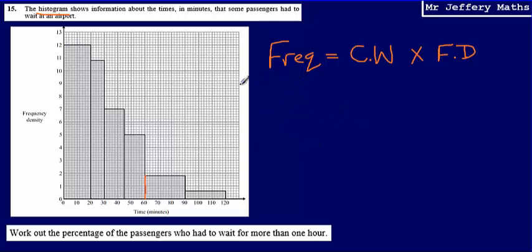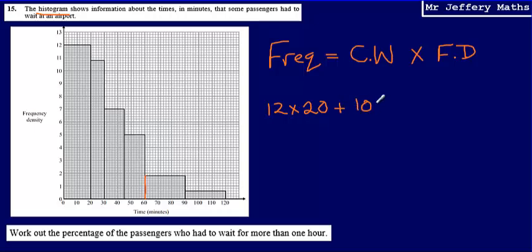So this first bar is 12 multiplied by 20 — class width of 20, frequency density of 12. The next one is 10 multiplied by 10.8.